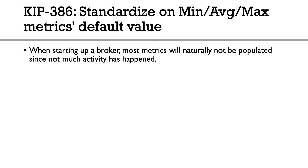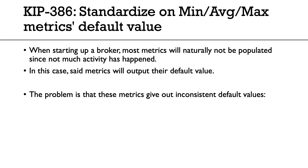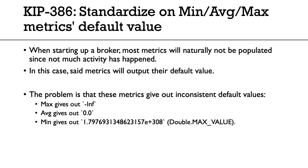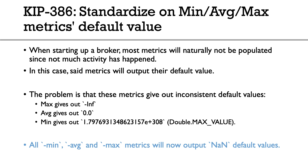Another important internal change is that the min, average, and max metrics now have a default standard value. Before, when you started a broker, min, max, and average didn't make sense because not much activity had happened. The metrics would output inconsistent default values: max output negative infinity, average output zero, and min output Double.MAX_VALUE. Now, all min, average, and max metrics will output NaN — not a number — as their default values. So if you have metrics collection or alarms that rely on these default values, make sure to update your alarms because the defaults are changing to NaN.